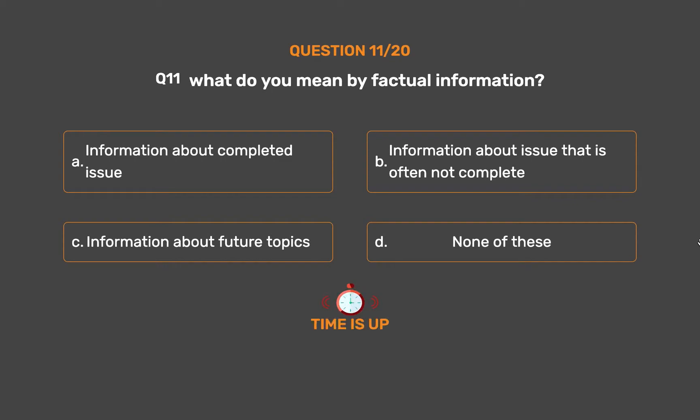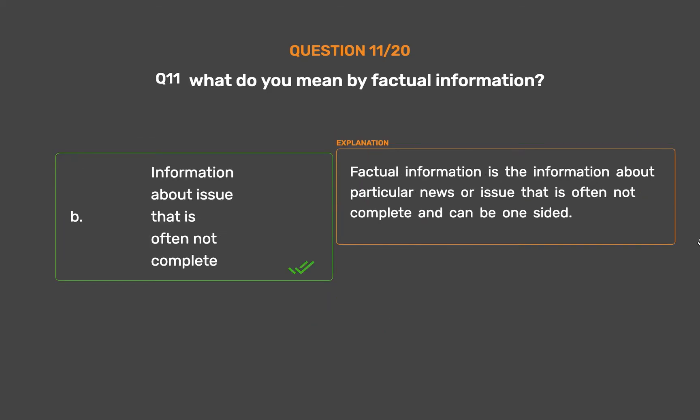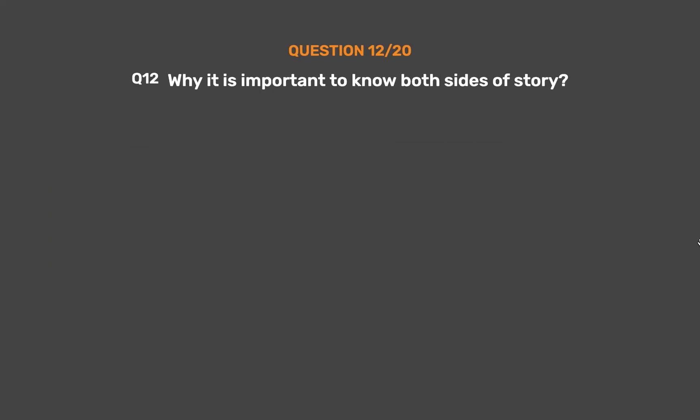The correct answer is Option B: Information about an issue that is often not complete. Factual information is the information about a particular news or issue that is often not complete and can be one-sided.